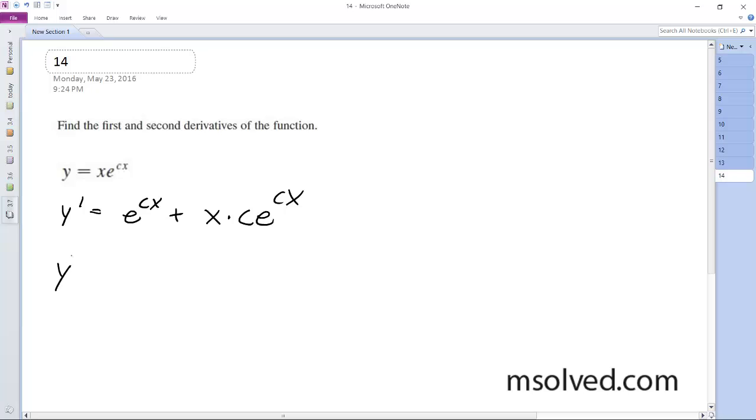That's it for that one. Now for y'', we'll rewrite this. Since c is a constant, y'' is going to equal: the derivative of e^(cx) is just c times e^(cx), plus...